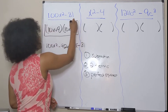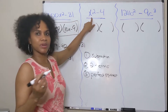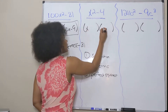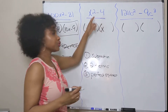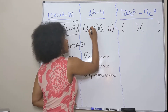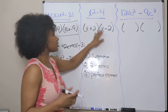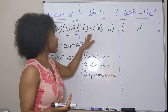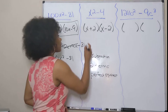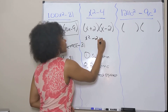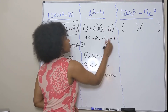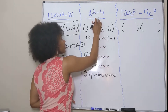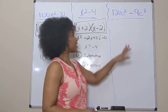For the next one, you take the square root of your first term: the square root of x² is just x, so x goes in each binomial. The square root of 4 is 2, so 2 goes at the end with a plus and a minus. Checking it: x² minus 2x plus 2x minus 4 — the 2x terms cancel out, leaving x² minus 4, which is the original expression.